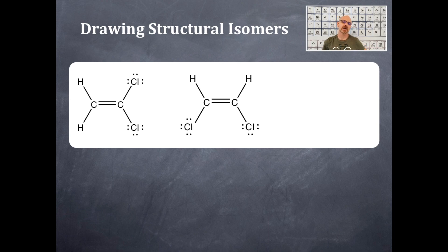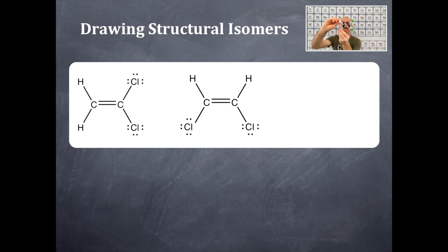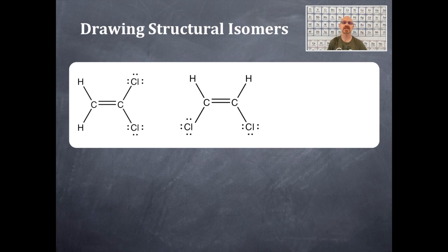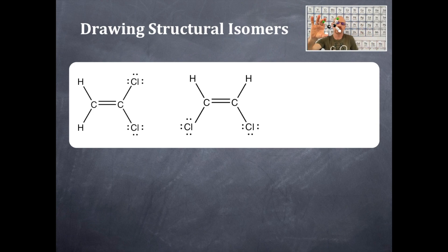Now, about the first structure: if you were to twist or redraw the molecule, it is still the same structure. Whether you draw the chlorines on the right or on the left, it is the same structure — those are not different isomers. An isomer requires a physically different arrangement of atoms. So drawing the chlorines on the top instead of the bottom in the second structure is still the same thing.